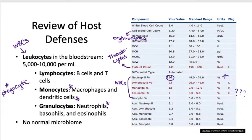In terms of the microbiome of the bloodstream, there should be no normal microbiome. As we discussed in Unit 3, some organs and tissues that should be sterile include the heart and the bloodstream — the circulatory system fluid. The circulatory system should be sterile, and there should be no normal microbes.